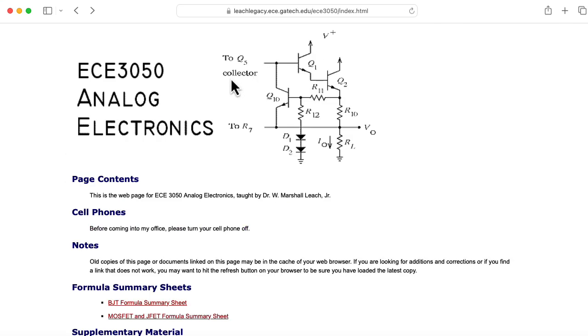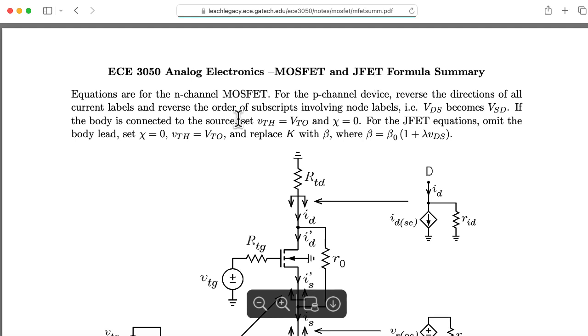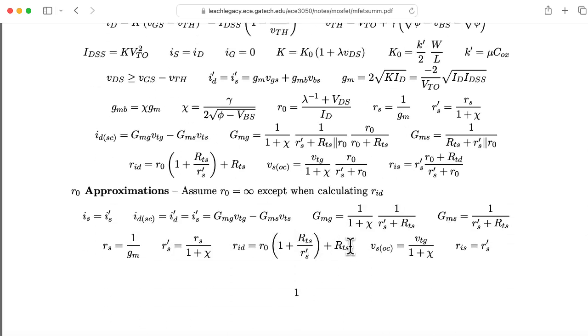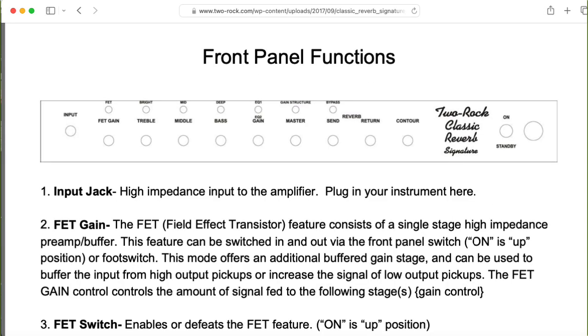If you look on Marshall Leach's Analog Electronics website, remember EC3050 is an older number for what we now call 3400. You can find his MOSFET and JFET formula sheet. For JFETs, there's this chi parameter that you want to set to zero. And if we do that, you'll find the formulas down here. Here's the formula for RID. You'll find the formula for GM here, where you set chi equal to zero. The Thevenin equivalent voltage looking into the source is just VTG, since we set chi to zero. RIS equals RS prime, which when you set chi to zero is just RS. And RS equals one over GM. In the next video, we'll use these Norton and Thevenin equivalent circuits to analyze some traditional single-JFET amplifier topologies.